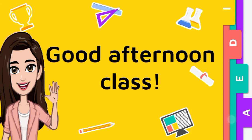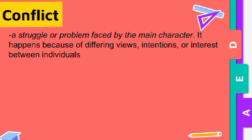In literature, conflict is a struggle or problem faced by the main character. It happens because of differing views, intentions, or interests between individuals. A conflict can make it difficult to form a positive and healthy relationship.